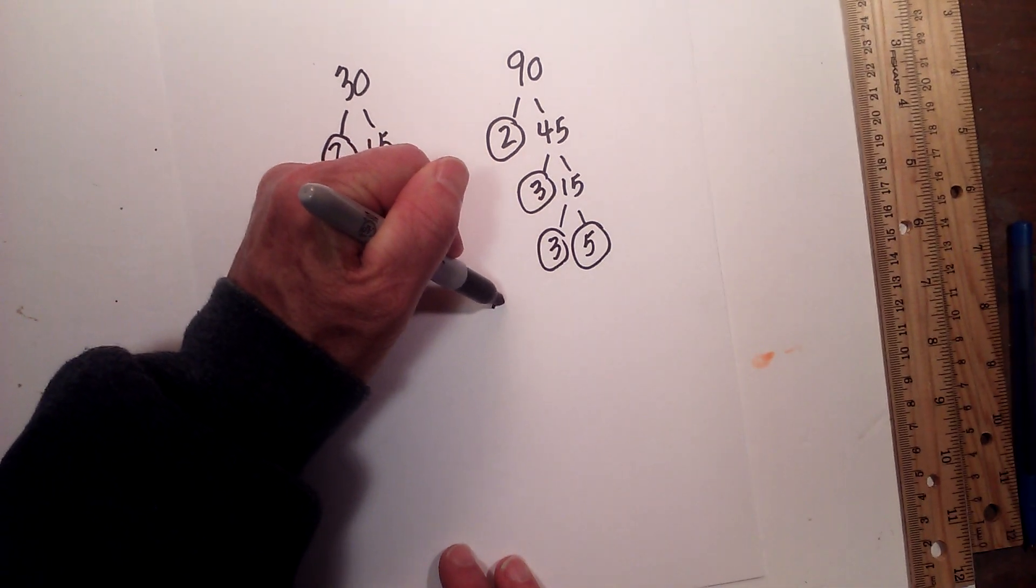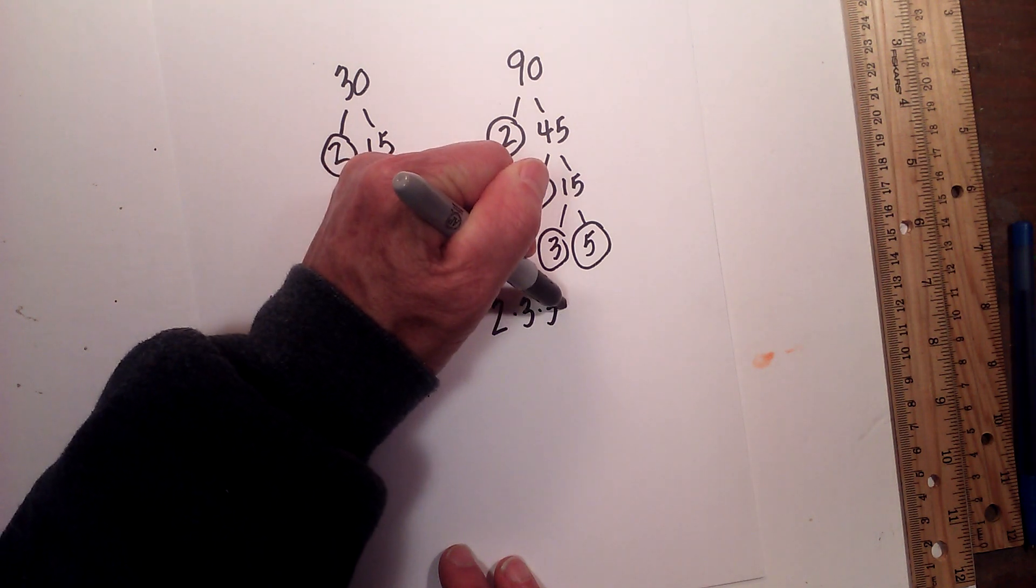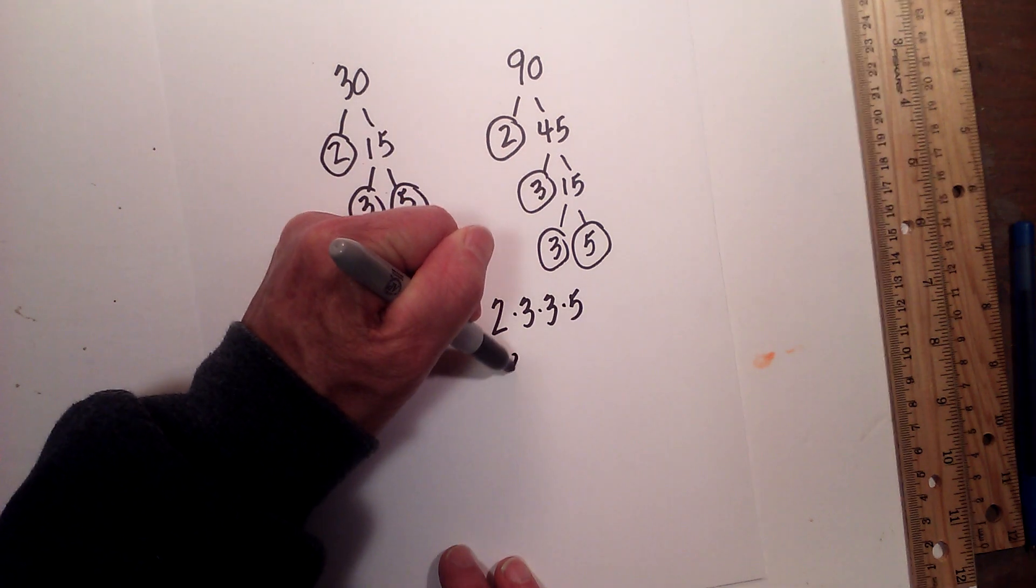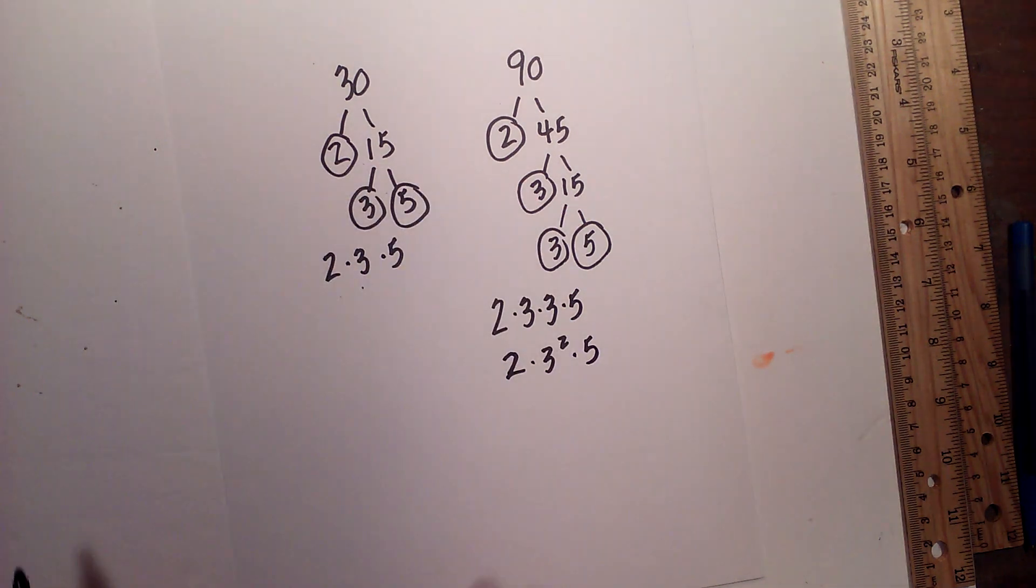So the prime factorization is 2 times 3 times 3 times 5, or you can write it 2 times 3 squared times 5.